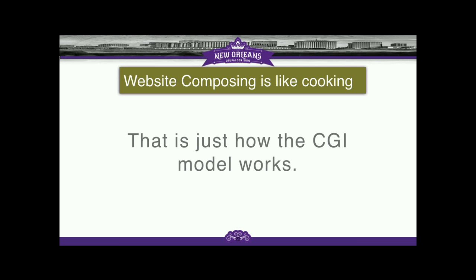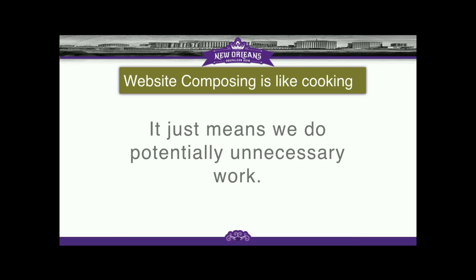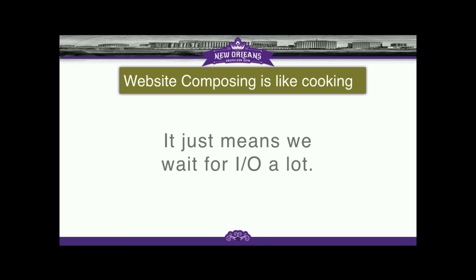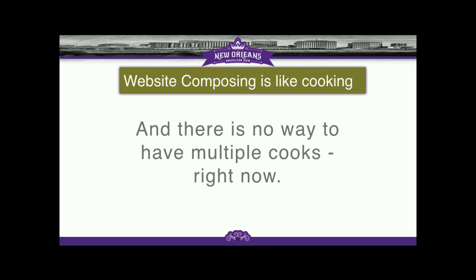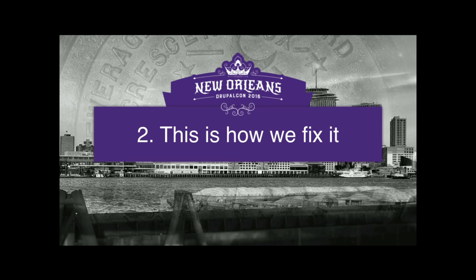In the CGI model, a web server accepts your request and passes it on to your CGI — like PHP-FPM or mod_PHP. This is how our vault works, but this is not how Node.js works. It just means we potentially do very unnecessary work and wait for IO a lot, especially with PHP 7. And there's no way to have multiple cooks right now — it's really just one cook running around the room getting ingredients.